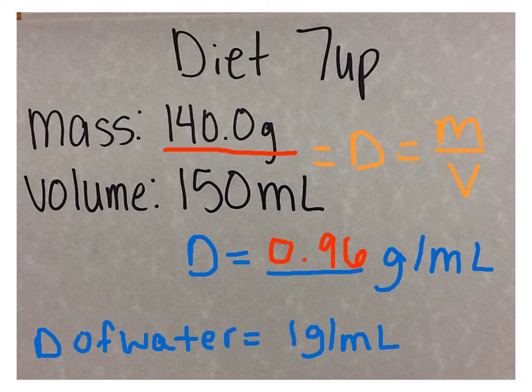The density of water is 1 gram per milliliter. Therefore, Diet Seven Up and Sprite Zero would float on water.